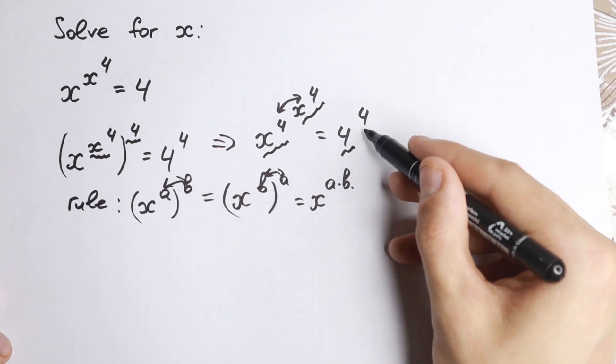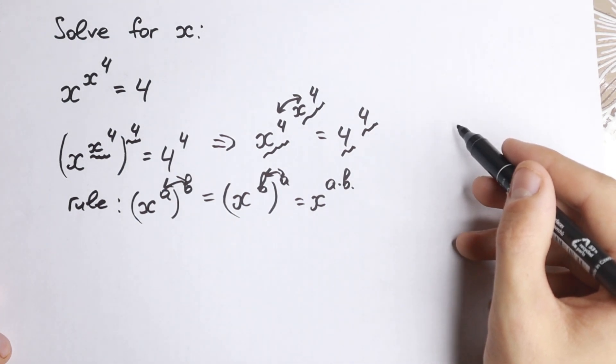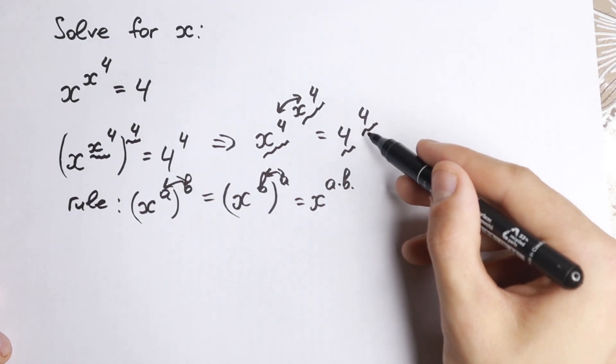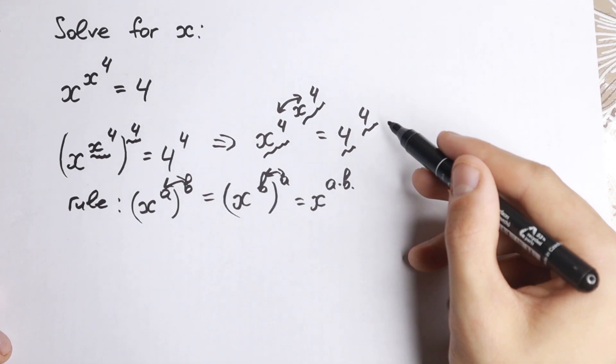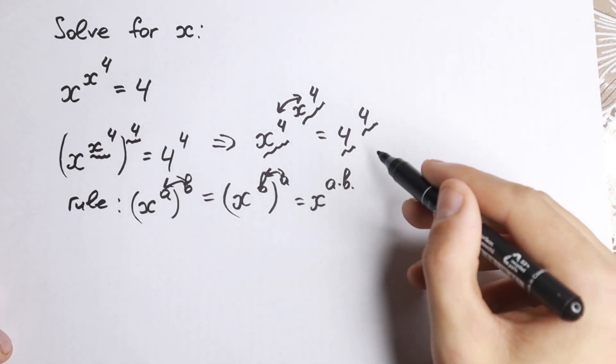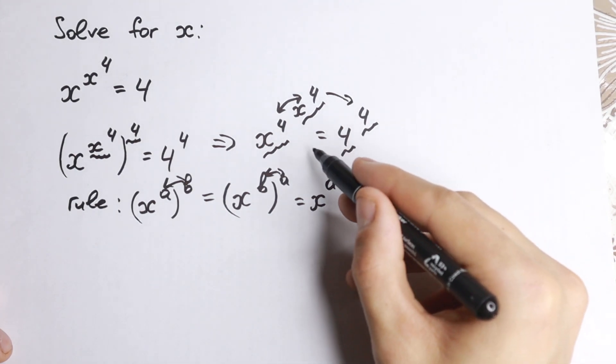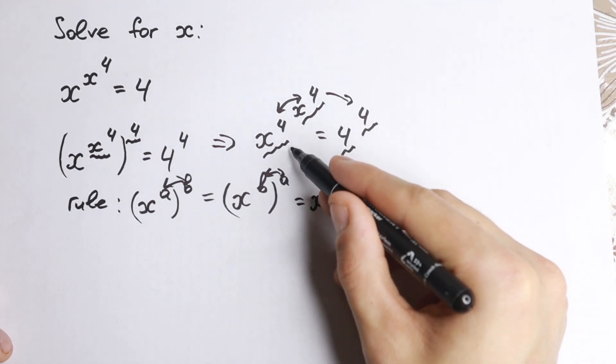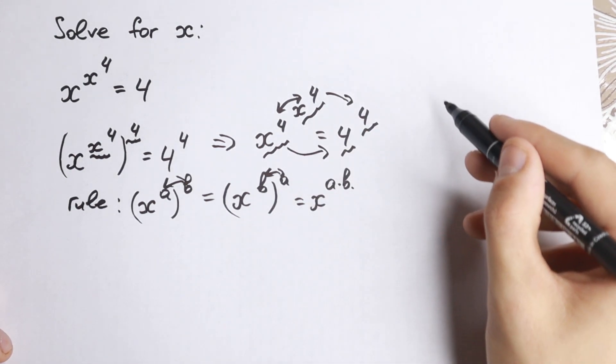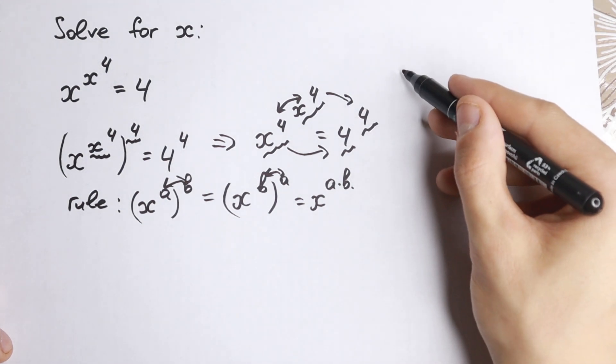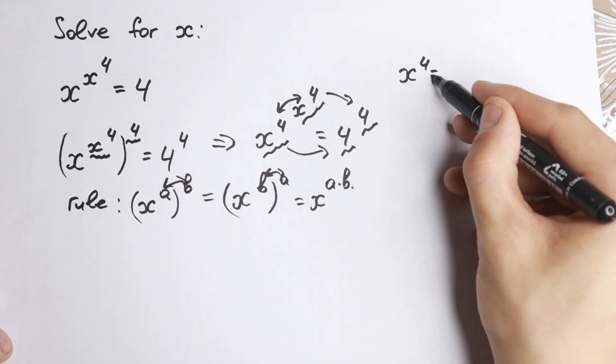And right here we have the same base and same exponent, same power. On the right side we have the same base and same exponent. The only case that this equation works is when x to the fourth equals four as exponent and x to the fourth equals four as a base. So we will have x to the fourth equal to four.